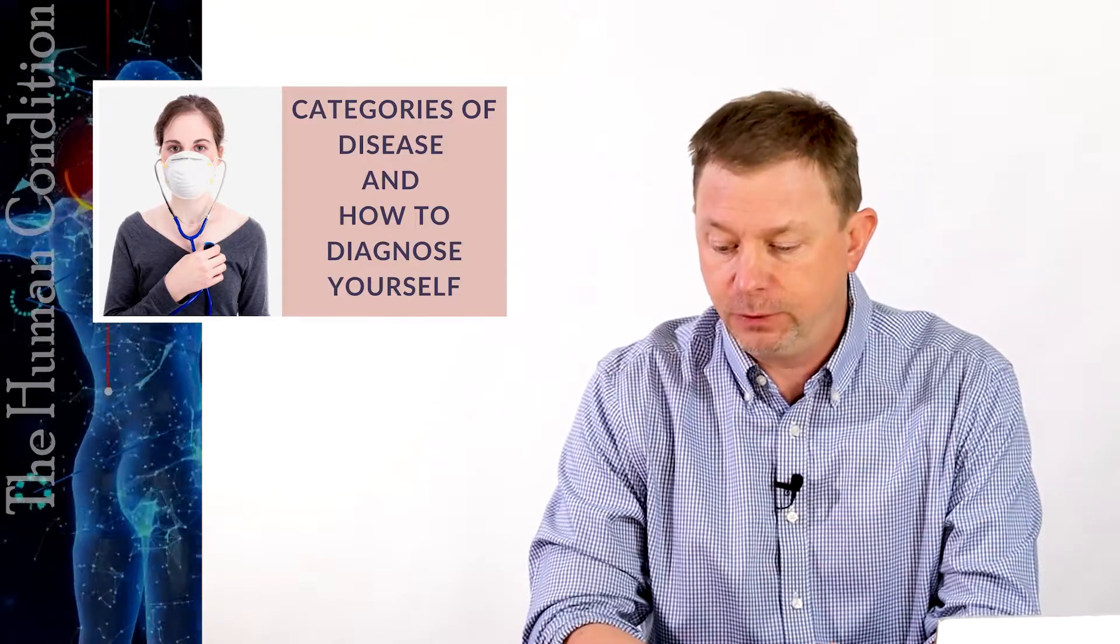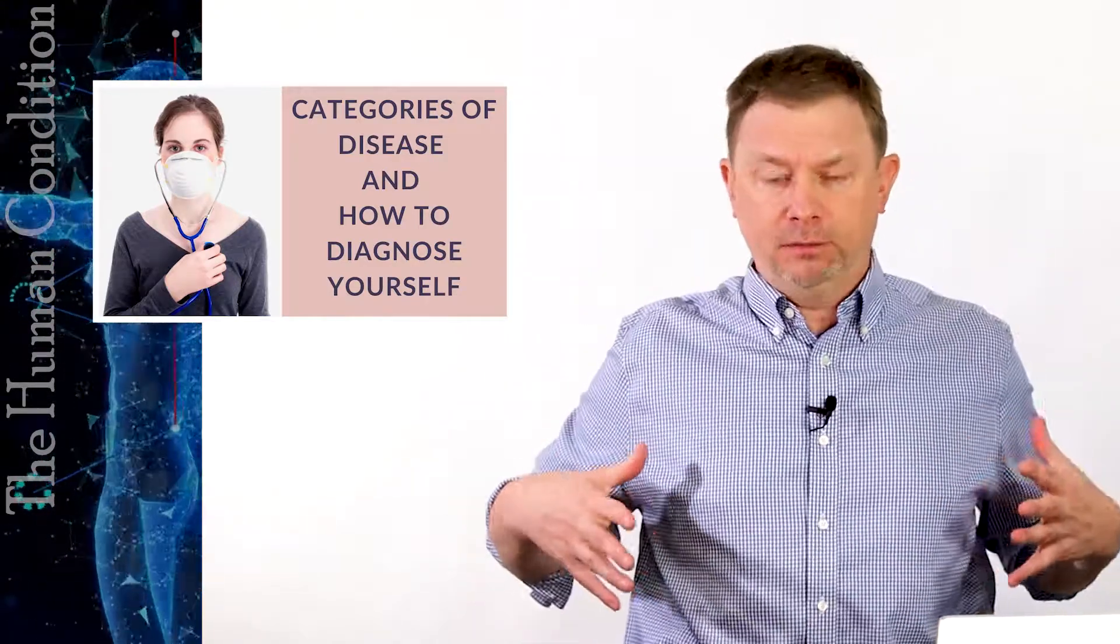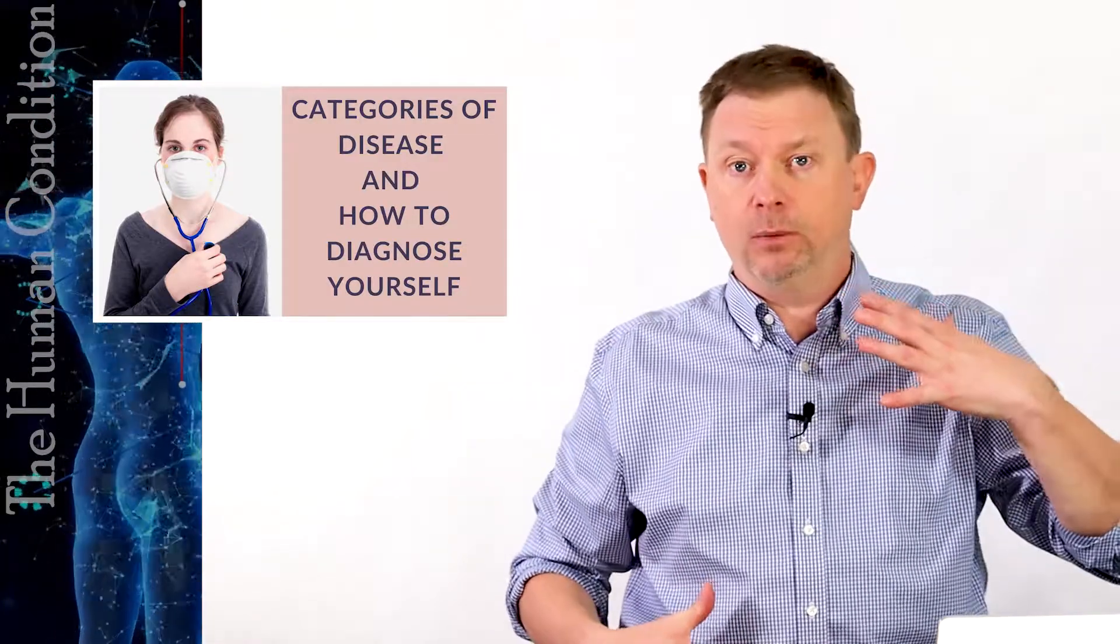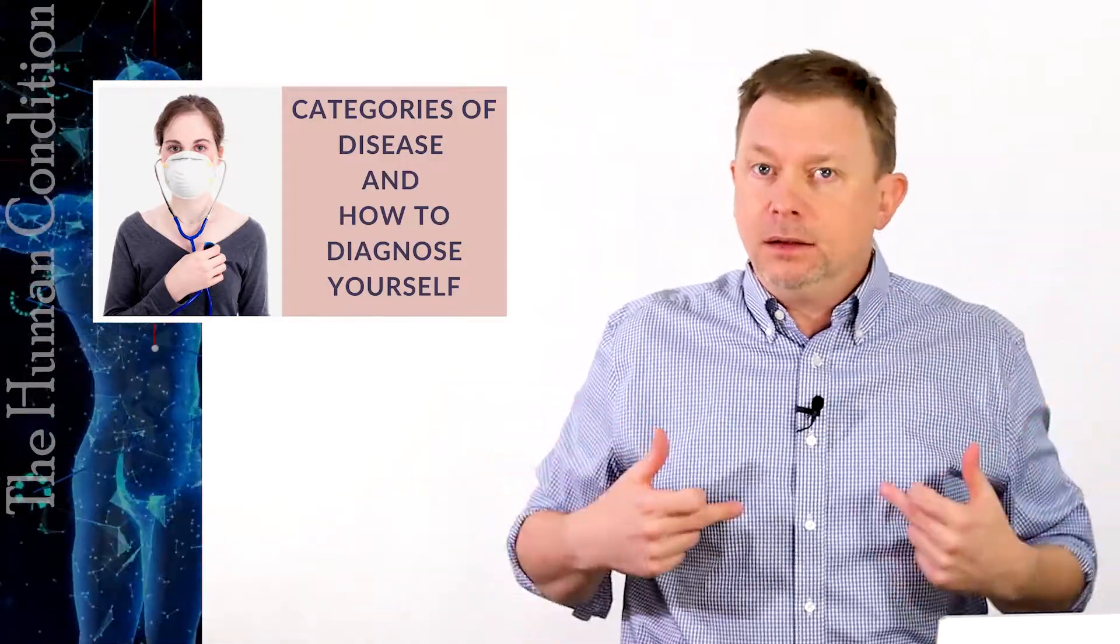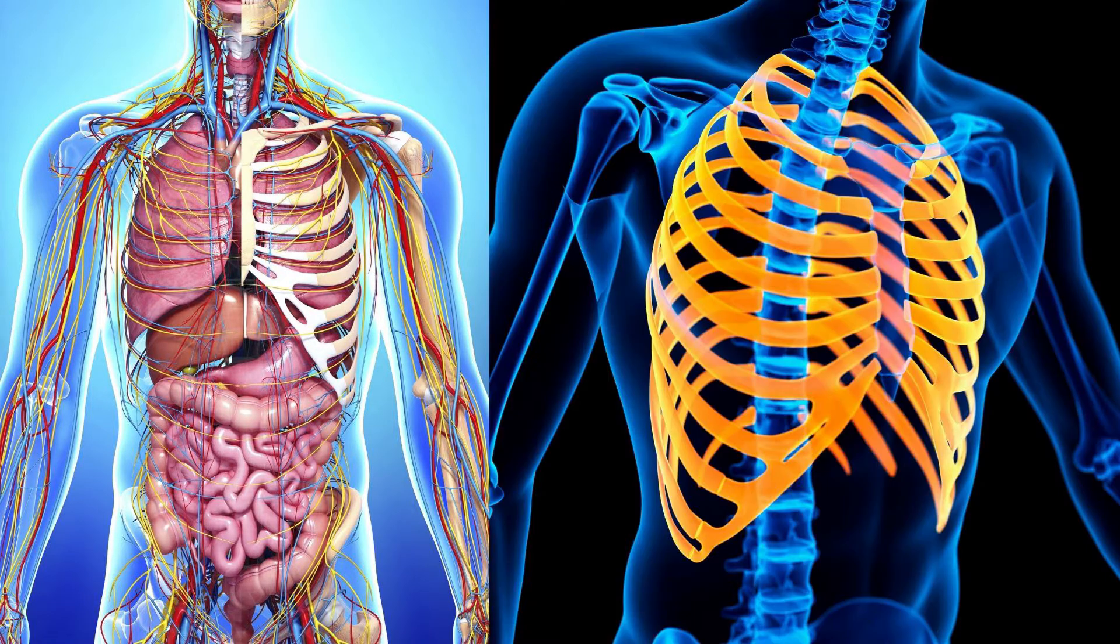The next category after that would really be looking at organ systems. If I hurt in my chest cavity somewhere, is it my lungs that hurt, that is the source of the pain generating the pain, or is it my ribs? I have ribs in the front. I have joints in the front. I have joints in the back.